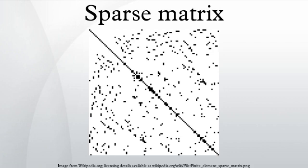In numerical analysis, a sparse matrix is a matrix in which most of the elements are zero. By contrast, if most of the elements are non-zero, then the matrix is considered dense.